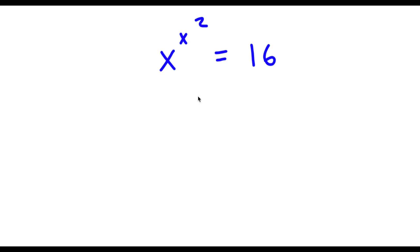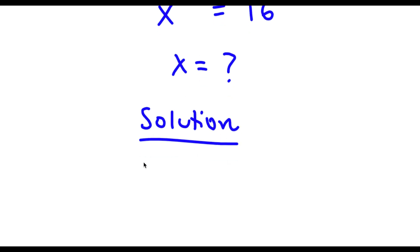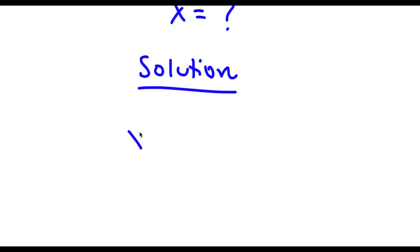Alright, so I have x to the power of x to the power of 2 is equal to 16. I'm going to find the value of x here. For my solution, I'll start with x to the power of x to the power of 2 is equal to 16.